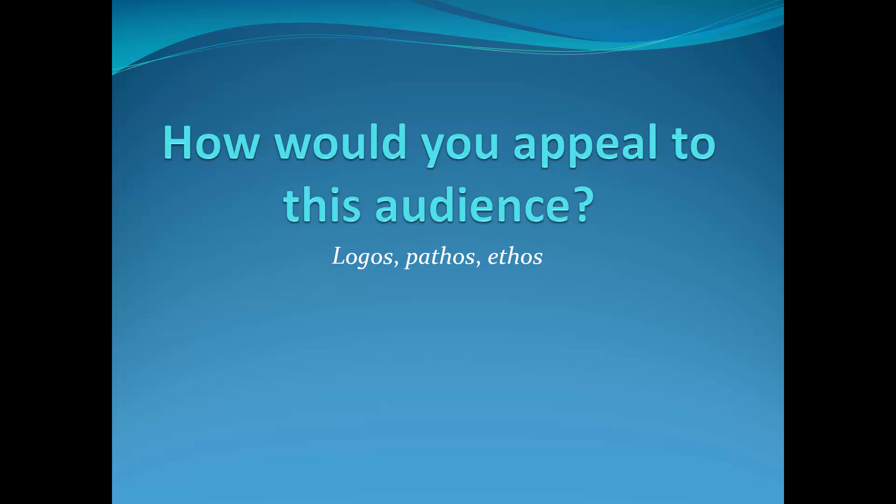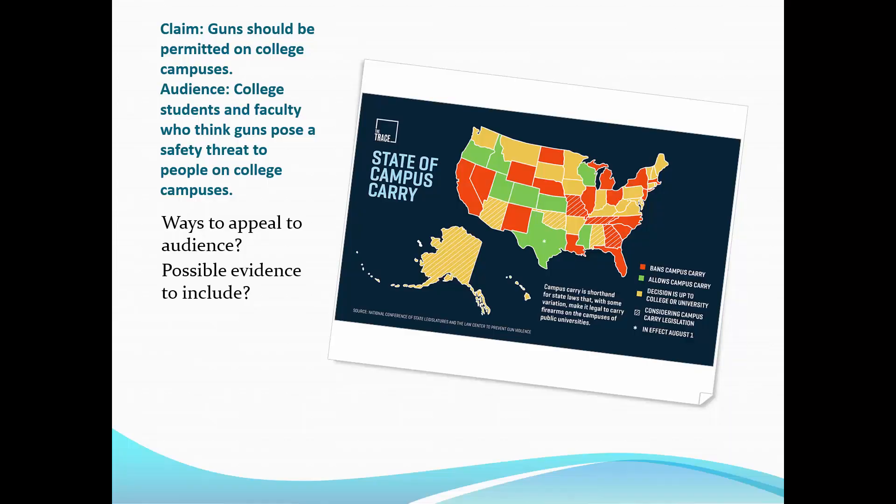I want to give you some example audiences. Maybe pause the slides between seeing the audience and hearing my explanation, and think about how you might appeal to this audience through logos, pathos, and ethos. So if we have the claim that guns should be permitted on college campuses, and the audience is college students and faculty who think guns pose a safety threat to people on college campuses, what could we do to appeal to this audience? What possible evidence could we include?